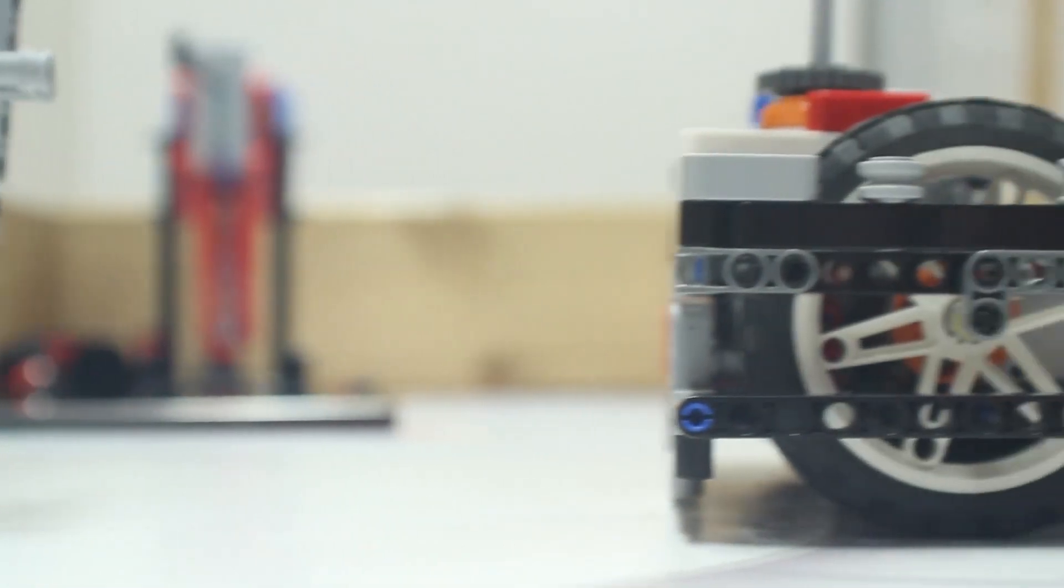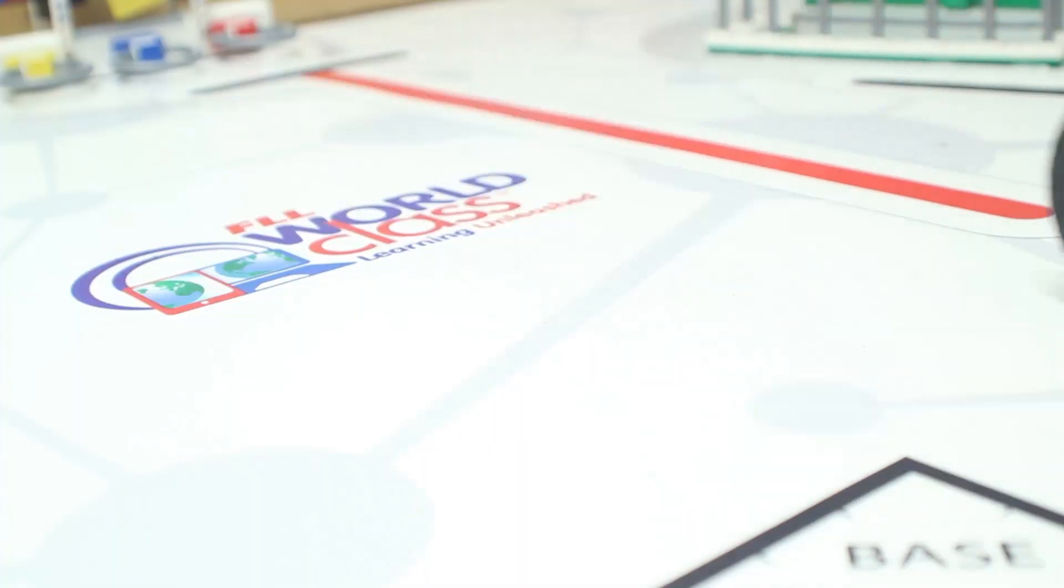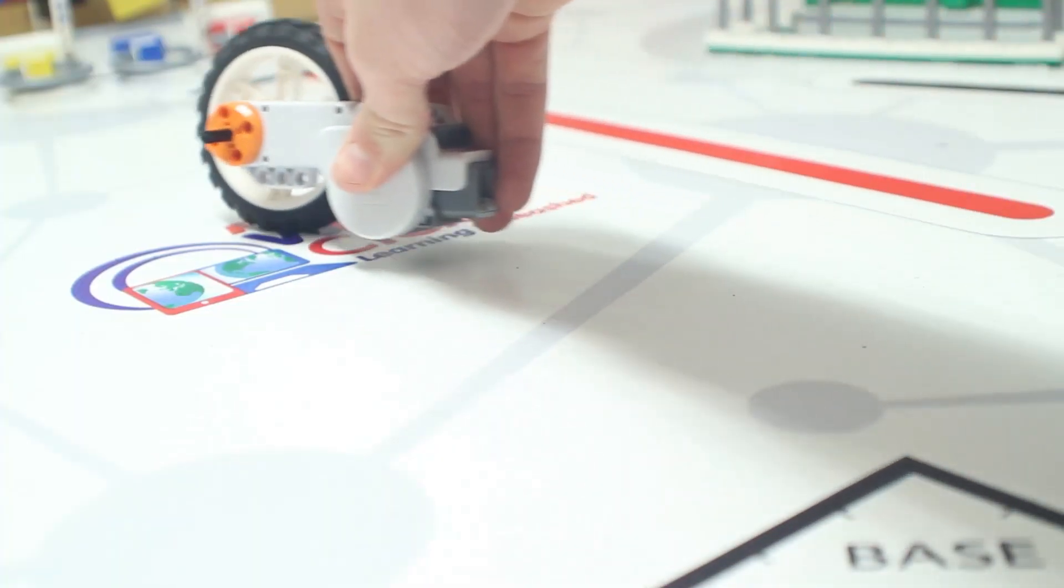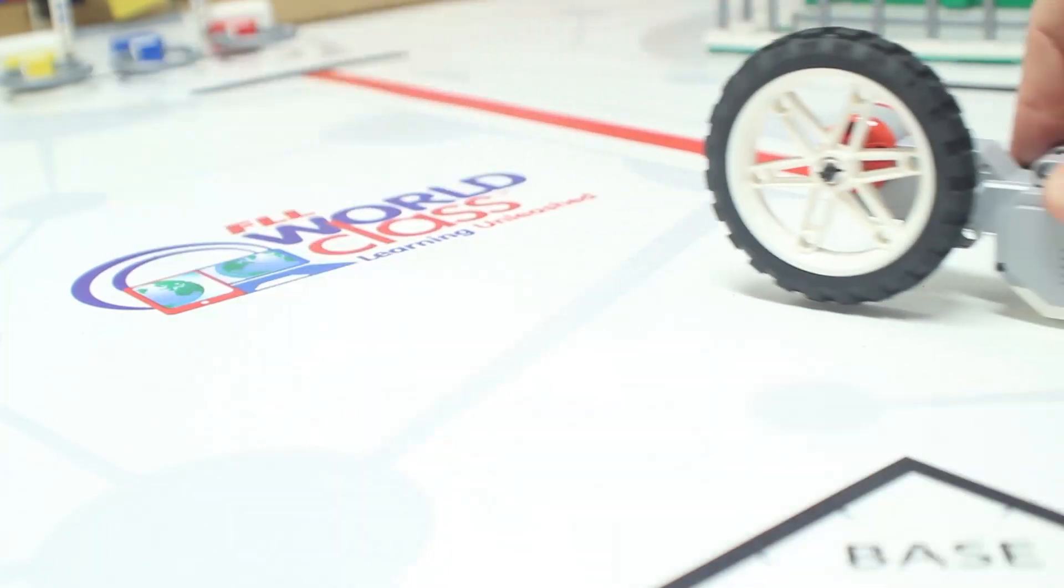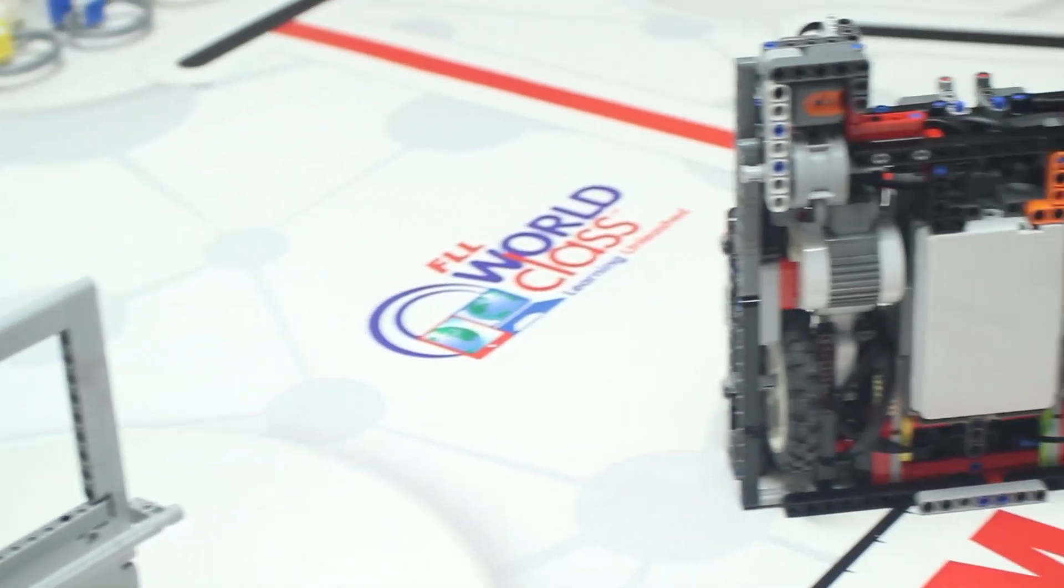This robot uses NXT and has a low profile. To get this low profile we take advantage of the NXT motors. Flipping them upside down allows you to get extremely low to the ground, but you cannot do this on the new EV3.